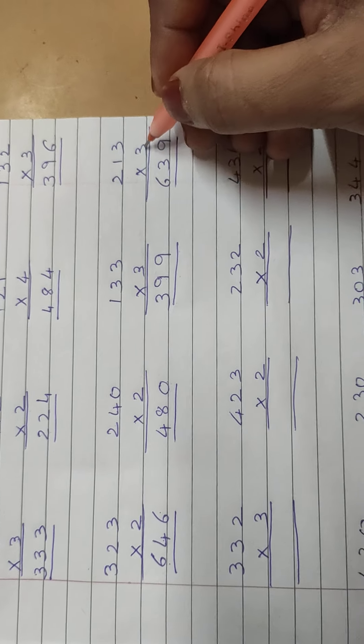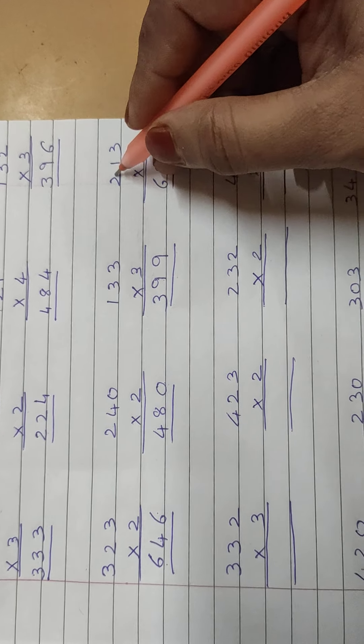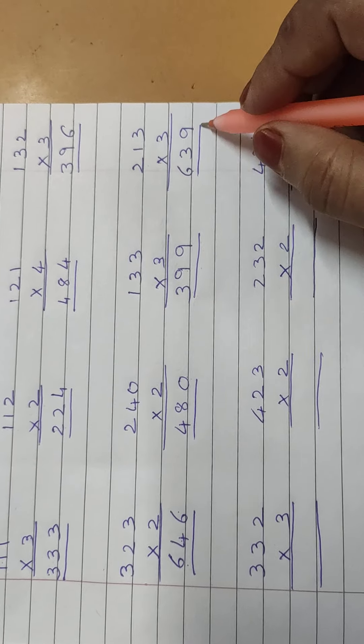213 multiply by 3. 3 threes are 9, 3 ones are 3, 3 twos are 6. 639.